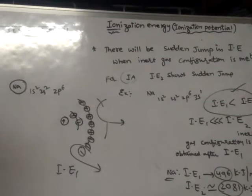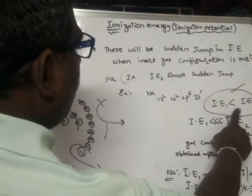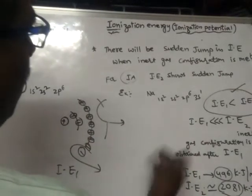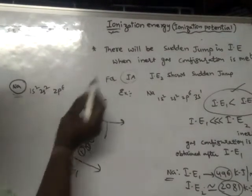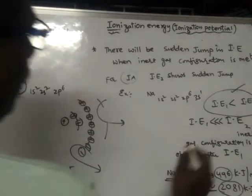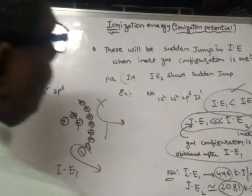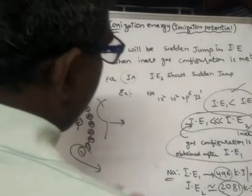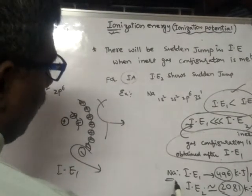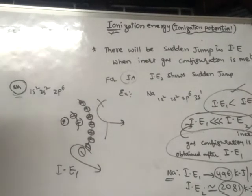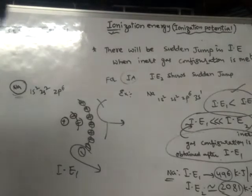There will be a sudden jump in ionization energy. Normally the second ionization energy is greater, but here it is much greater because sodium, after removal of one electron, gets the inert gas configuration. The first ionization energy of sodium is 496 kJ/mol, but the second ionization energy is nearly 2081 kJ/mol — a large difference showing a sudden jump.